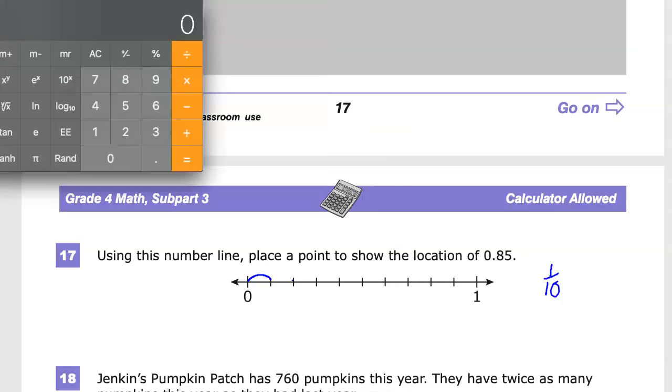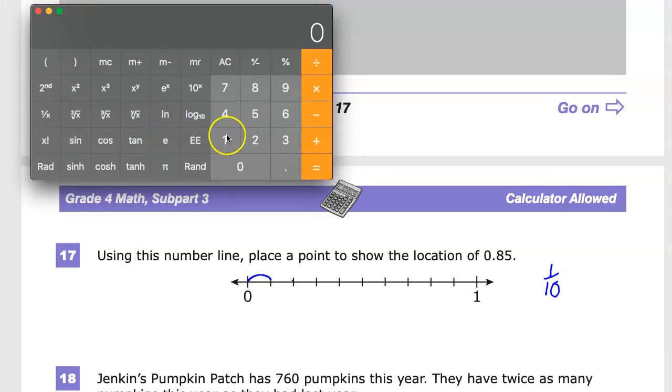You probably already know this, but it's a calculator allowed section, so you're allowed to use it. I might as well just show you that 1 tenth, which is the same as 1 divided by 10, is 0.1.